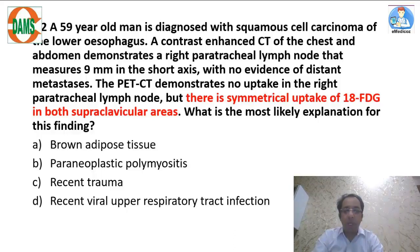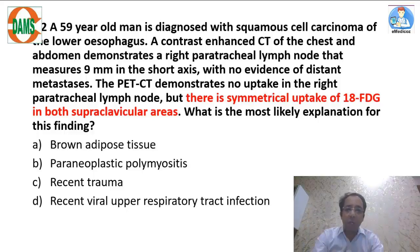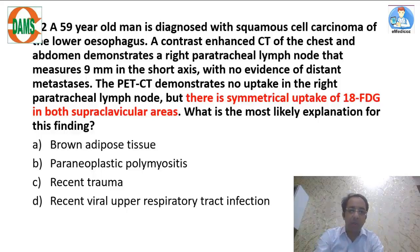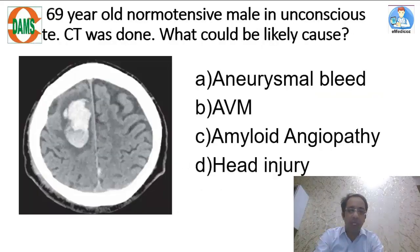There is FDG uptake in both supraclavicular regions symmetrically, and this is the area where you have physiological brown fat. Brown fat is metabolically active and accumulates FDG because of its metabolic activity. You can pick this up from the question itself — this is physiological uptake, not metastasis. This is brown fat uptake, and the answer is A.